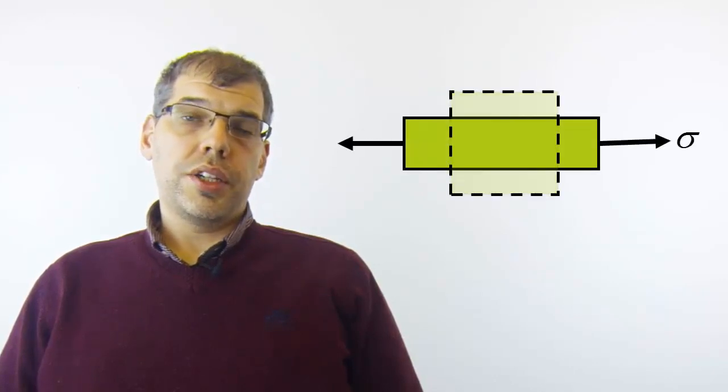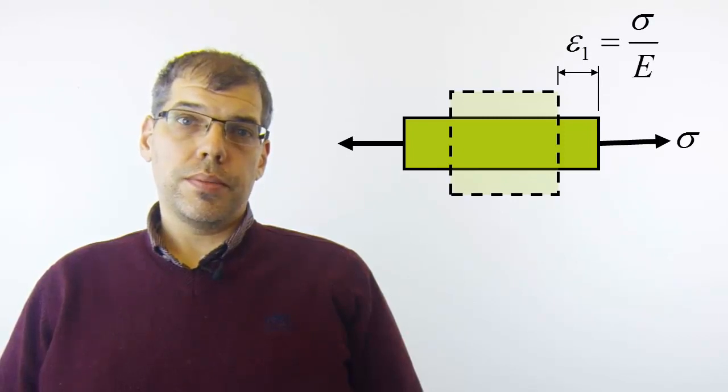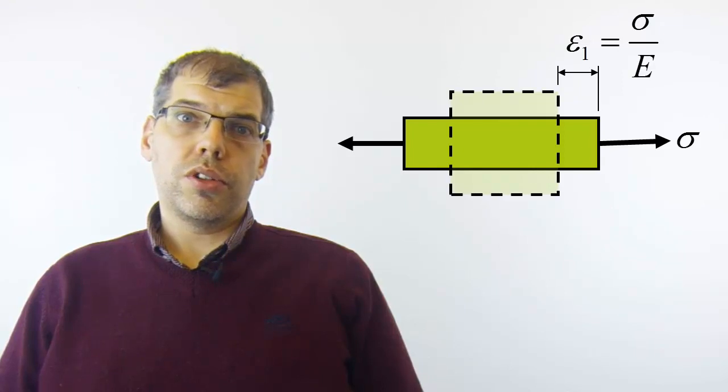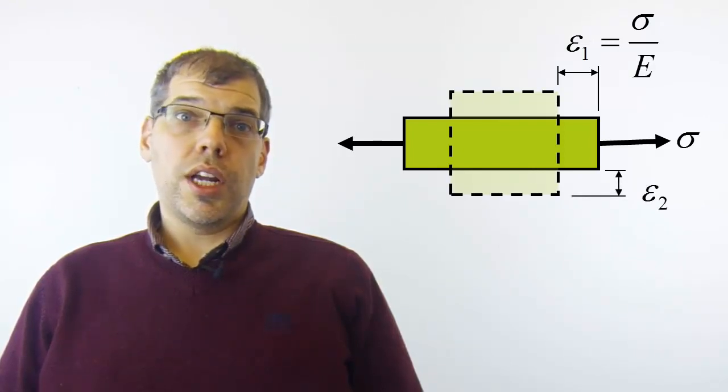From Hooke's Law, we see that the normal strain in direction of loading is linearly proportional to the normal stress. However, this is not the only deformation that occurs under normal stress loading. We also get a strain in the transverse direction.